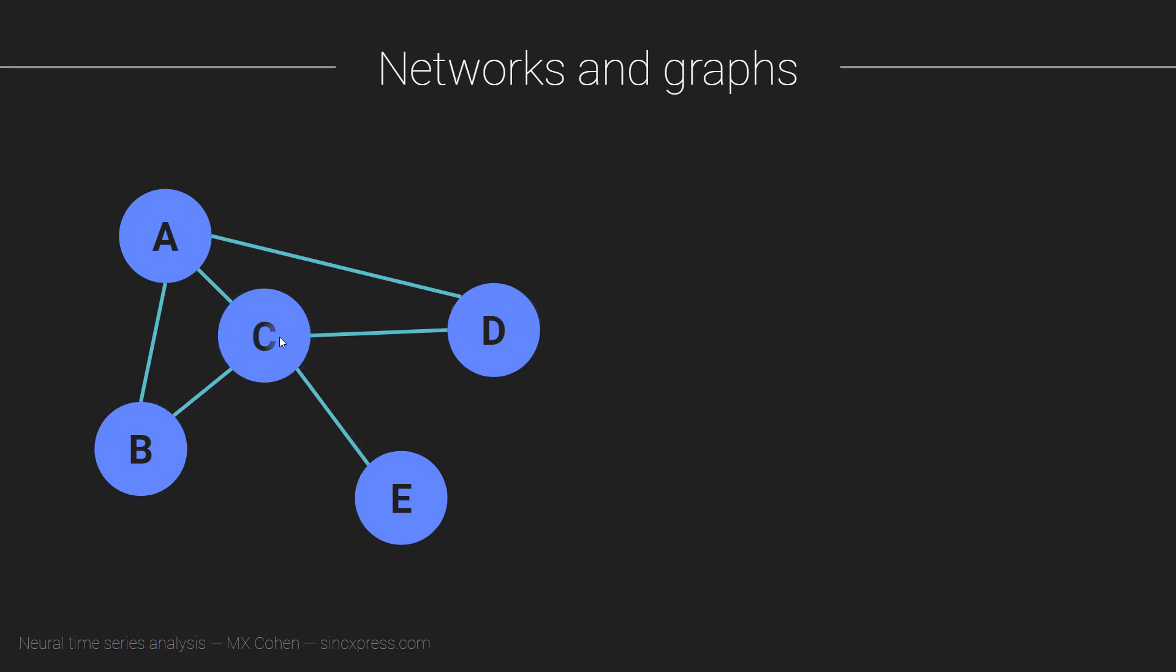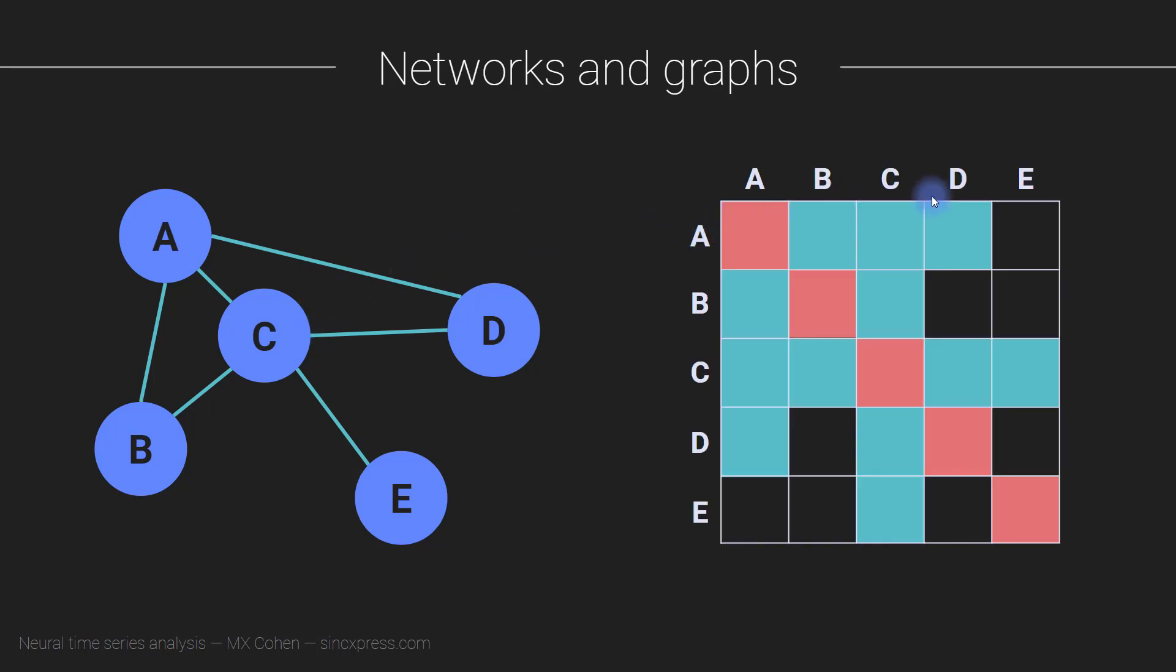Let's say you have a network - this is an abstracted network where you can think of these as electrodes or brain regions, and a line between two nodes represents a connection. This is different from electrophysiology where you compute synchronization between every possible pair of channels - not just whether there is or isn't a connection, but whether the connection is strong or weak. We can also measure all the connections in this network using a matrix.